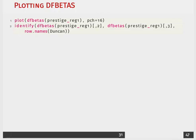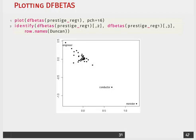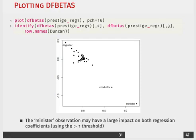We can just plot df betas. That's what we're doing in the first line. I'm just clicking on some that may be larger than others. Now, what we can see here is that the minister observation may have a large impact on both the regression coefficients, using that kind of greater than one threshold.